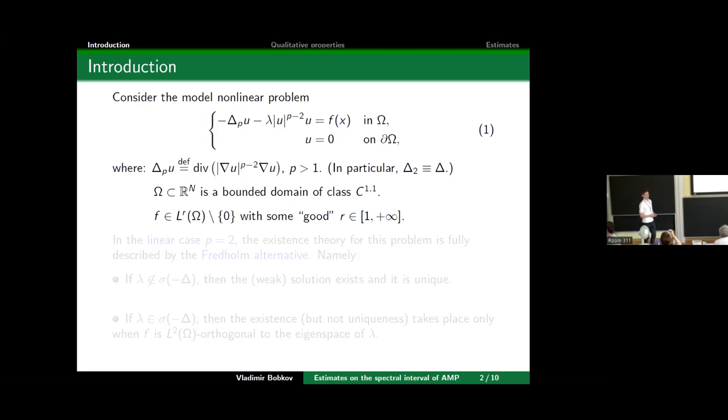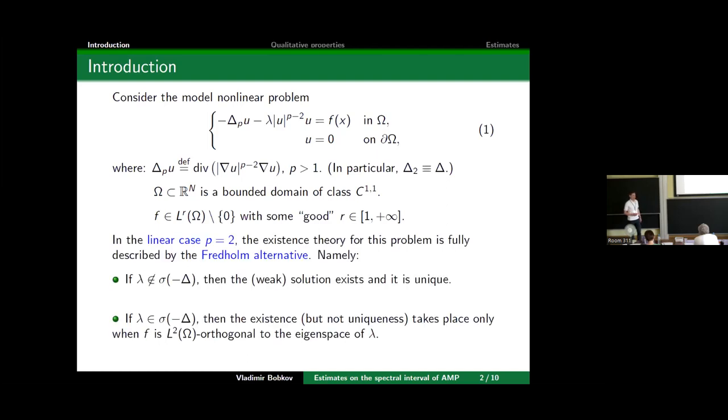We assume that Ω is a bounded domain of class C^{1,1}—maybe it can be relaxed, but certainly it's sufficient. Concerning the right-hand side, at the moment let us say that it is rather good, so it belongs to some Lebesgue space with good exponent. Our main aim is to discuss some qualitative properties of solutions. Therefore, let me briefly say about the existence of solutions to that problem.